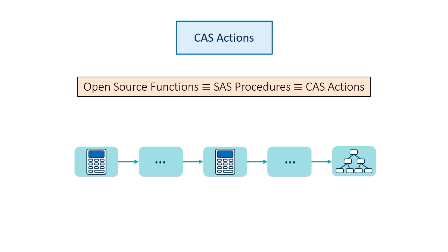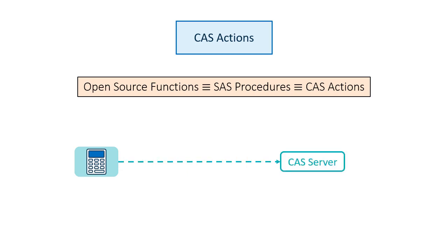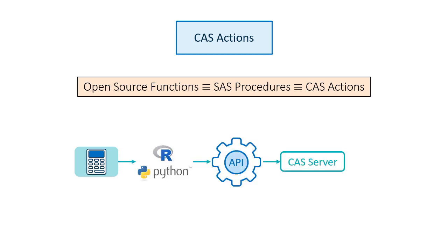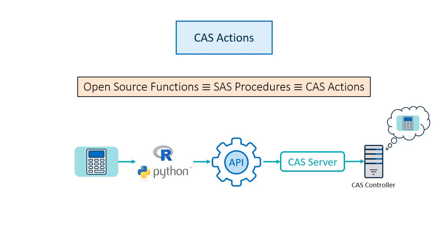We'll submit CAS actions to the CAS server using Python through an API designed to mimic the feel of native Python or R code. Regardless of how we choose to submit commands to the CAS server, the controller receives our CAS action and performs the processing steps corresponding to that action.